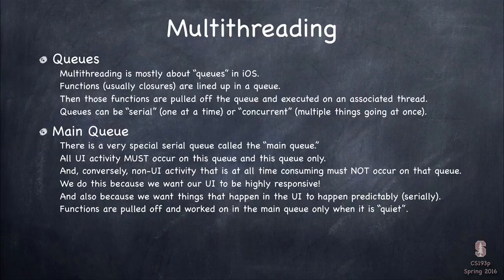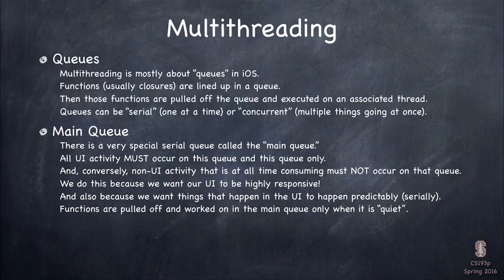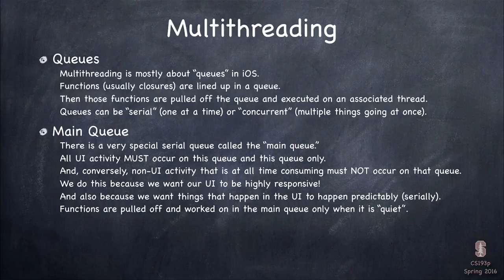We want the main queue reserved for doing our UI stuff as much as possible. This is not only because we want our main queue UI to be responsive — that's the main reason — but also it serializes the activity on the main queue so that our UI is presented in an orderly fashion. If we allowed our UI to be on all these different queues, things would be drawing at all different rates and overlapping; it would be unpredictable as to what happened on screen. We use the main queue as a synchronization point where everybody comes back to draw.